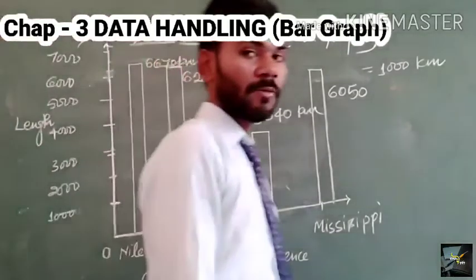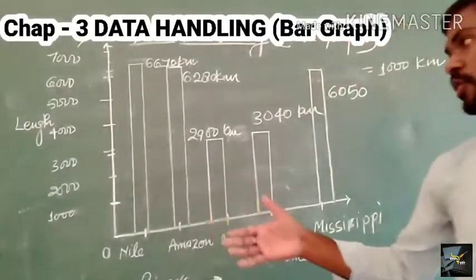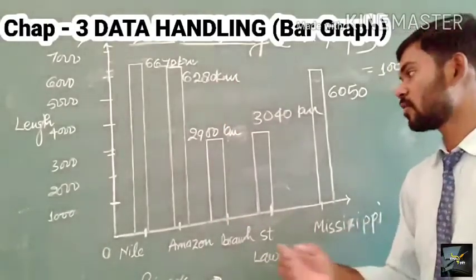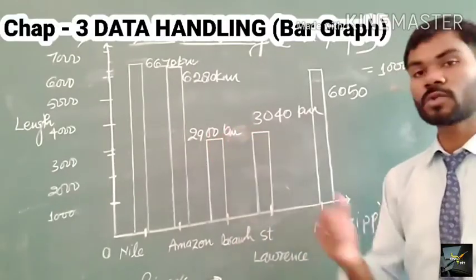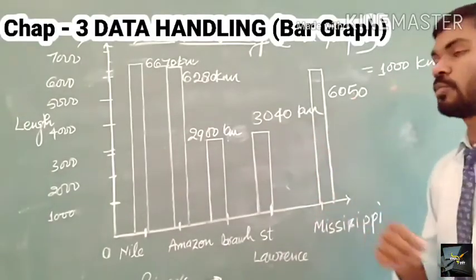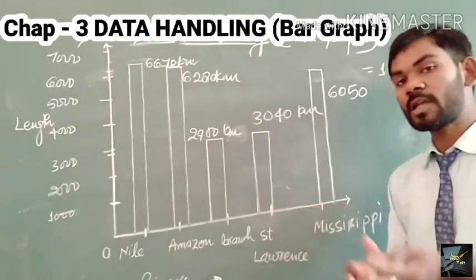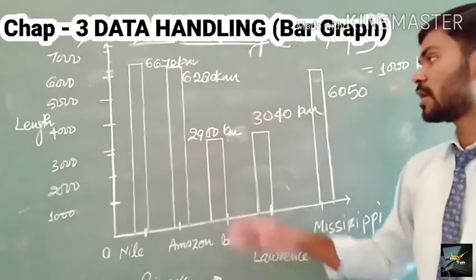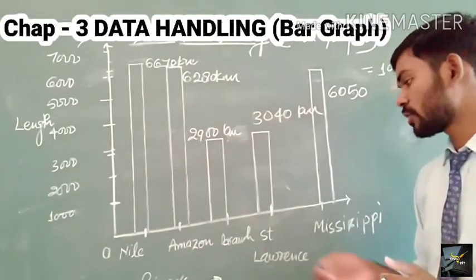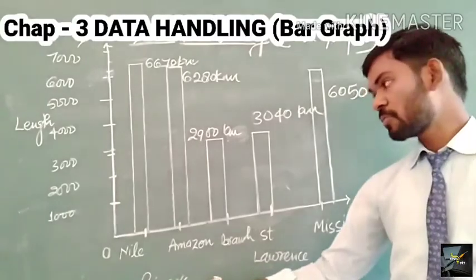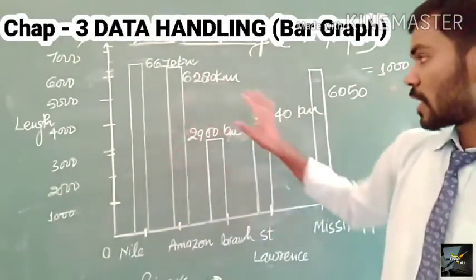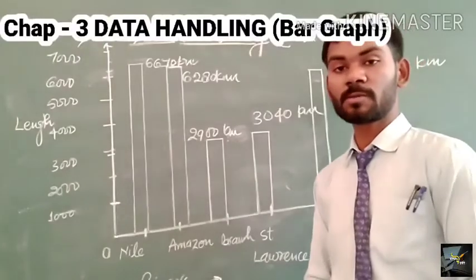So from the given data: the length of Nile is 6670 km, the length of Amazon is 6280 km, the length of Brahmaputra is 2900 km, St. Lawrence is 3040 km, and Mississippi Missouri is 6050 km. We have drawn the bar graph representing the length of each river. On the x-axis we represent the rivers and on the y-axis we represent their lengths. This graph represents the data using the concept of a bar graph.